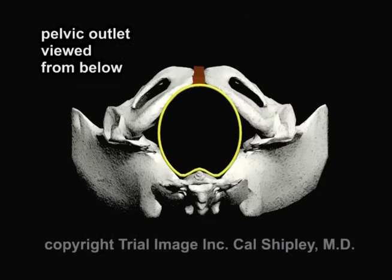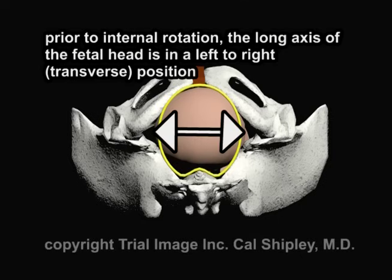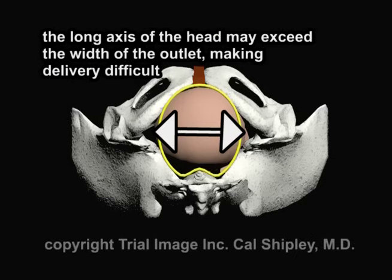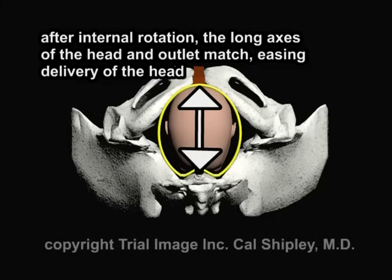To make this easier to see, recall our view from below of the pelvic outlet. Recall also that the long axis of the outlet runs from front to back. Prior to internal rotation, the long axis of the fetal head is lying in more of a transverse, left-to-right position. In this orientation, the long axis of the fetal head may exceed the width of the pelvic outlet, making delivery of the head very difficult. However, once internal rotation has taken place, the long axis of the fetal head and the pelvic outlet match, making delivery of the head much less of a challenge.